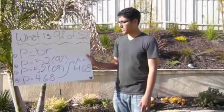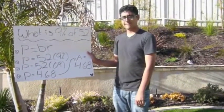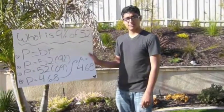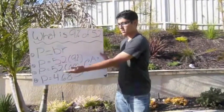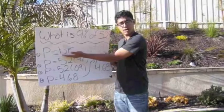So you want to know what 9% of 52 is? You've got to go through four steps. First, get your formula, which is P equals BR.